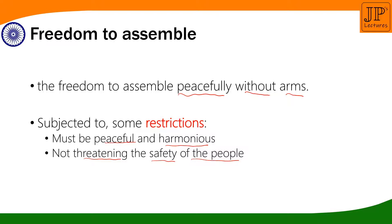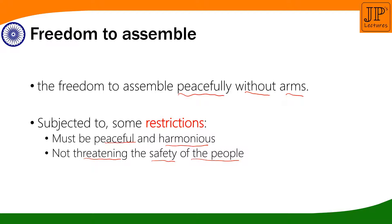The assembly must be peaceful, unarmed, and not threatening to the safety of people. You may think that people of Sikh faith wear and carry the kirpan, which is basically a type of sword — a weapon — and they gather in temples, gurudwaras, and public places carrying these things. This is covered under Article 25, which will be covered under the freedom of religion. I will explain this under Article 25.